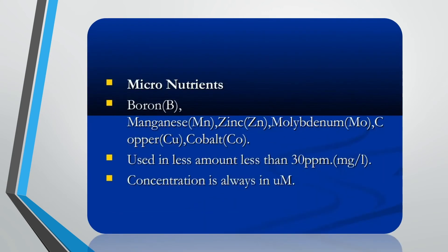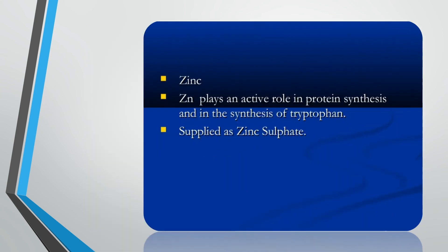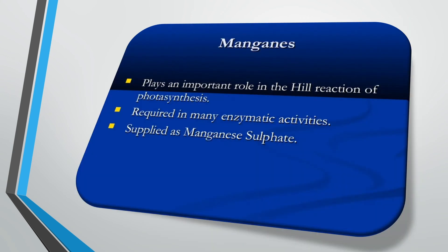Micronutrients include boron (B), manganese (Mn), zinc (Zn), molybdenum (Mo), copper (Cu), and cobalt (Co). They are used in less amounts, less than 30 ppm or mg/L, and their concentration is always in micromolar (µM). Zinc plays an active role in protein synthesis and in the synthesis of tryptophan, and is supplied as zinc sulfate.